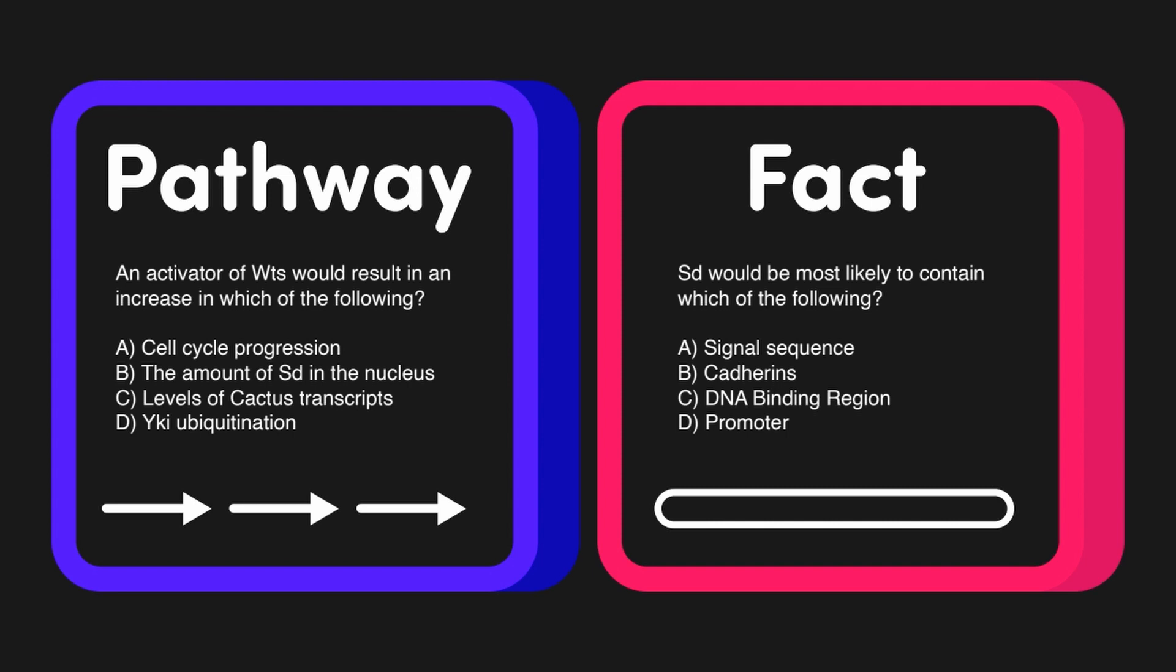And we're going to see that here in this particular question where it says an activator of WTS would result in an increase in which of the following. And then we get things like cell cycle progression, the amount of SD in the nucleus, the levels of cactus transcripts, and YKI ubiquination. It's talking about multiple parts of the pathway, so we're probably going to need to chart it out and figure out exactly what's going on.